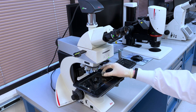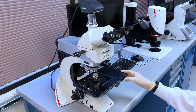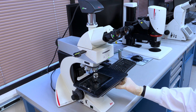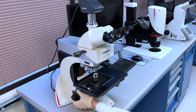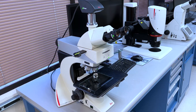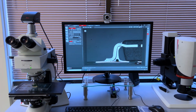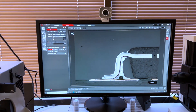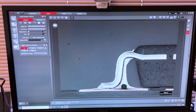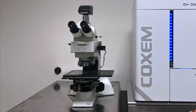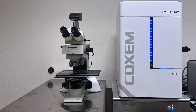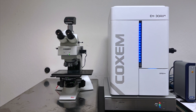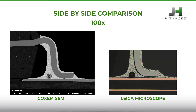Here we have the Leica DM2700M High Powered Materials Microscope. The system is configured with objectives allowing us to reach 1000x magnification, hardware and software capable of taking excellent images with varied lighting techniques. The system is configured with additional functionality to do grain analysis, measurement, annotation, and more. Here we compare the microscope images to those taken on the SEM at the same 100x magnification.